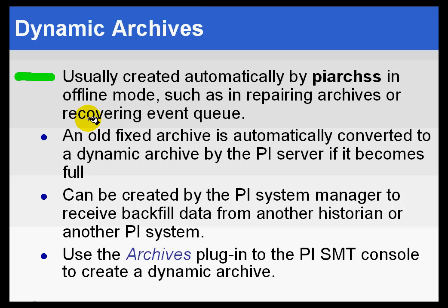For example, a PI ArcSS can actually create a dynamic archive when it is being used as what we call the offline archive — in offline mode to reprocess an archive.